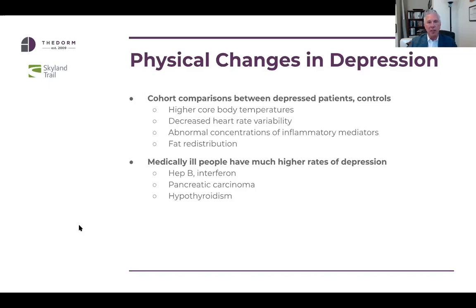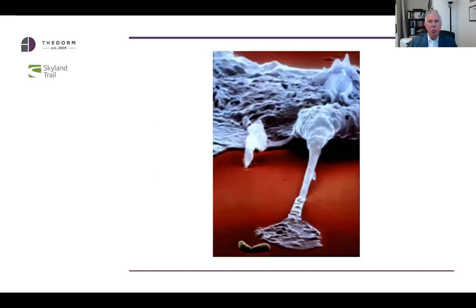We can also look at this from the opposite perspective: people with certain physical medical illnesses have much higher rates of depression. We used to think it was because they had insight into their illness. But it's more complicated. For example, almost 95% of people with pancreatic carcinoma — Alex Trebek included — have, as their first indication of cancer, the new development of major depression, way before they have any knowledge of having a carcinoma. This prompted the question: what happens outside the brain when people develop mental illness?